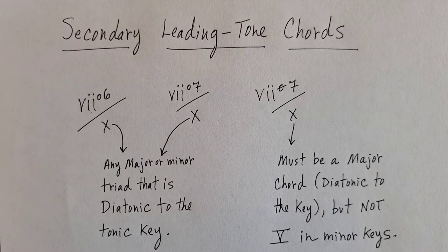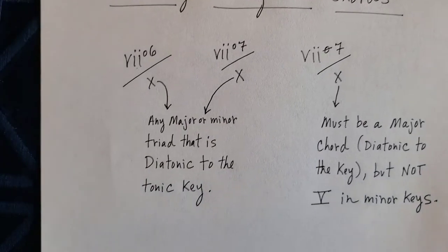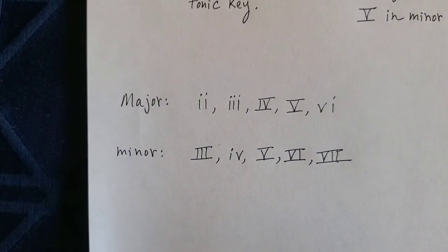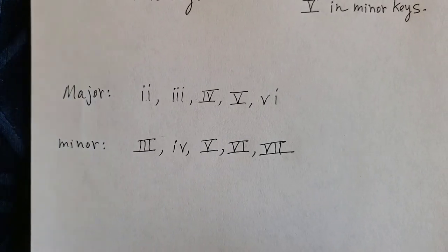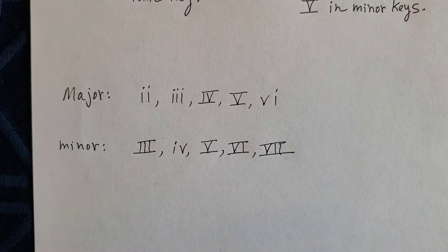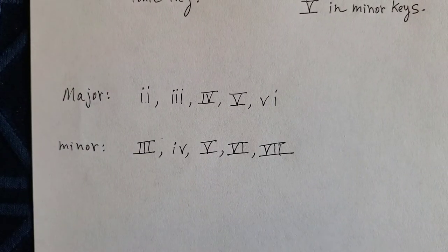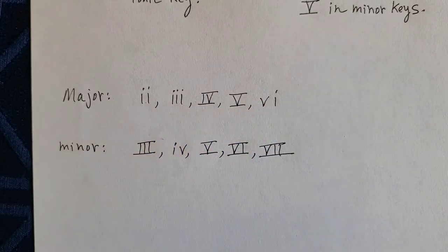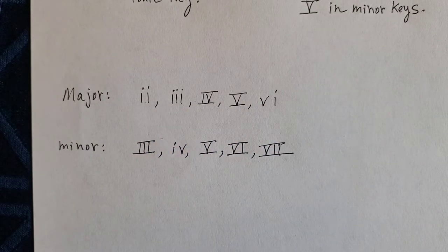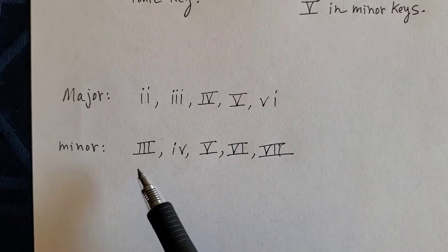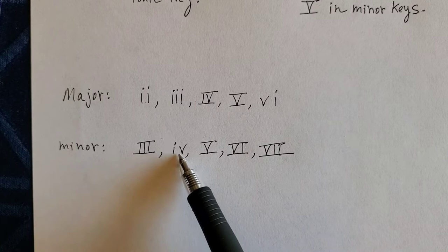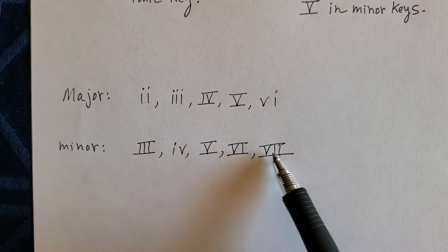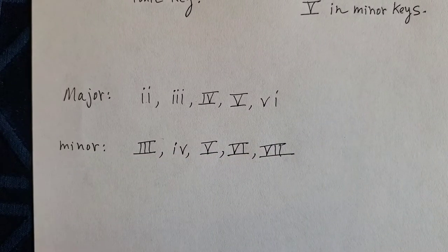To summarize: the diminished triad as a secondary leading tone chord can progress to or tonicize any major or minor triad that's diatonic to the key. The fully diminished seventh can also tonicize any major or minor triad diatonic to the key. However, the half diminished seventh will only go to a major chord diatonic to the key, but not V in minor keys. In major you can have a secondary leading tone chord of II, III, IV, V, or VI; in minor you can have III, IV, V, VI, or VII.